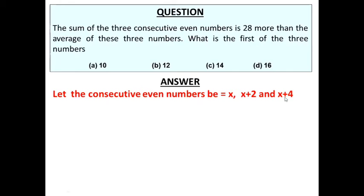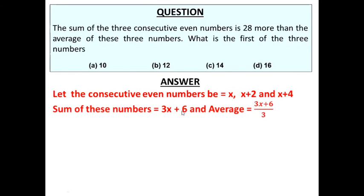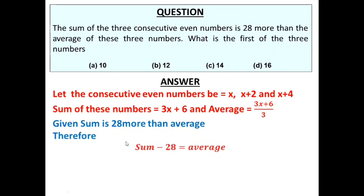The consecutive even numbers are x, x plus 2, and x plus 4. Their sum is 3x plus 6, and the average is (3x plus 6) divided by 3. The condition states the sum is 28 more than the average. That means if you subtract 28 from the sum, you get the average. So: sum minus 28 equals average.